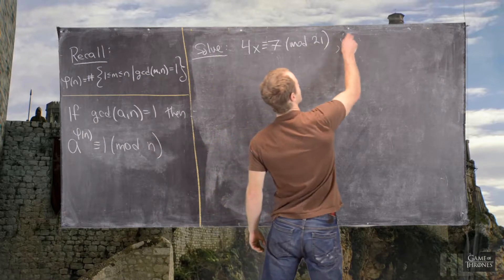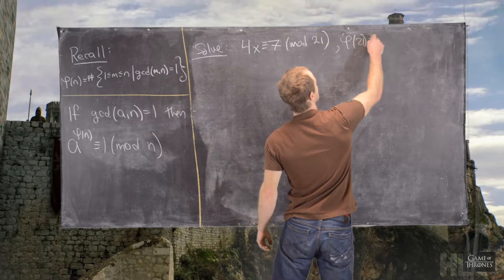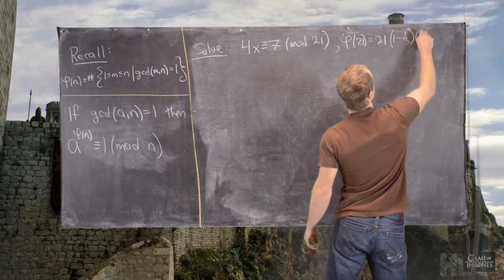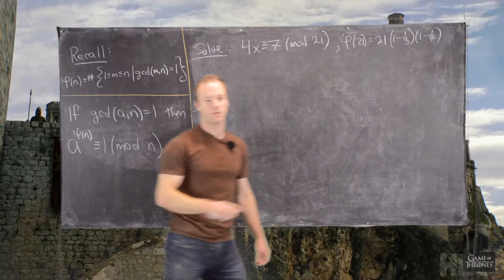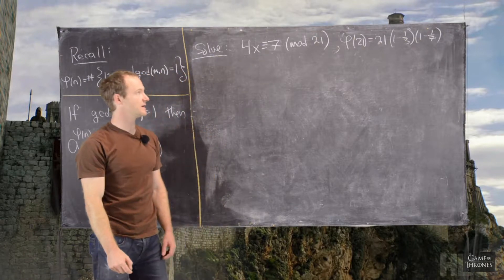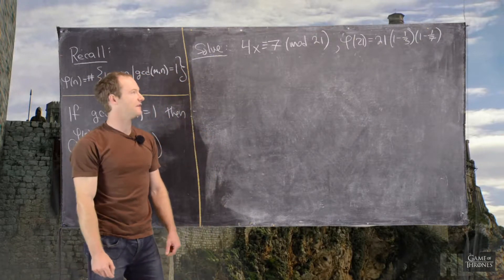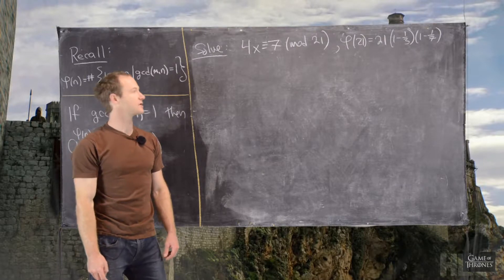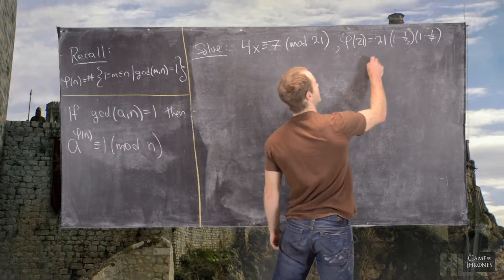So, we need to calculate phi of 21, which is going to be equal to 21 times 1 minus 1/3 times 1 minus 1/7, where we're using the formula for phi of n, so that's equal to n, and then the product of 1 minus 1 over the prime powers. So, in this case, we get 12.